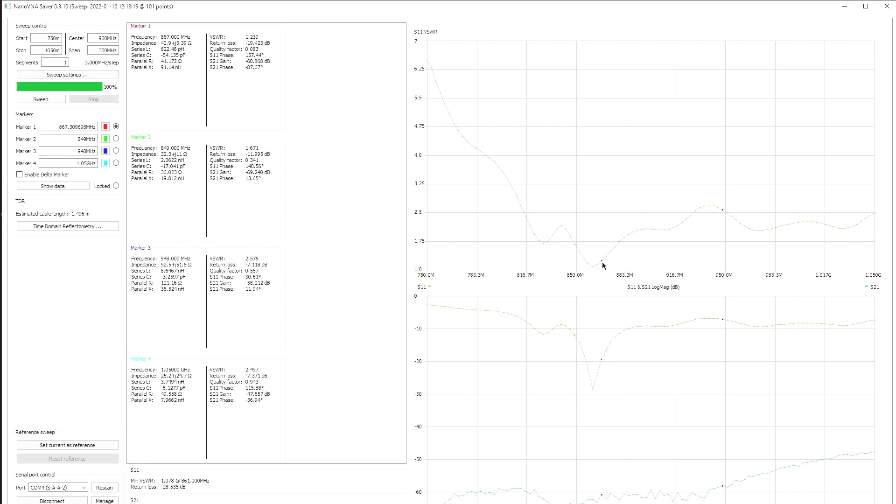What we need on the first screen is to display VSWR. Here we are at 867 MHz and the VSWR is 1.239. It's not perfect but it's much better than before. We had the dip in this area, now it went down to 861, much better.